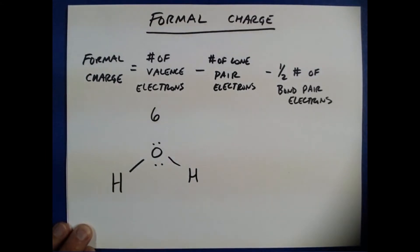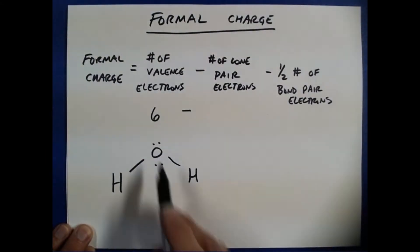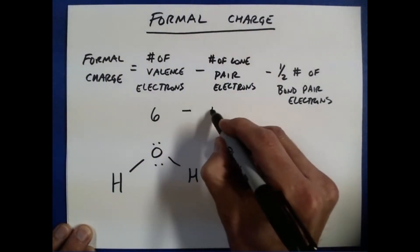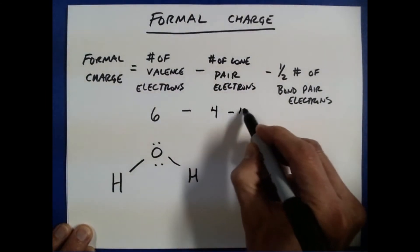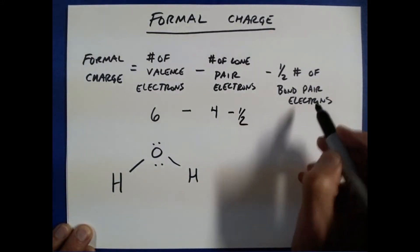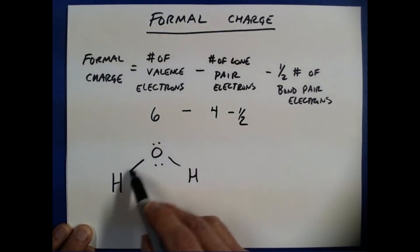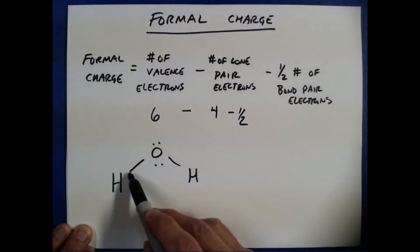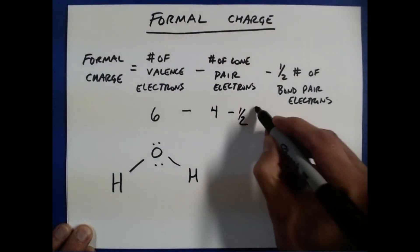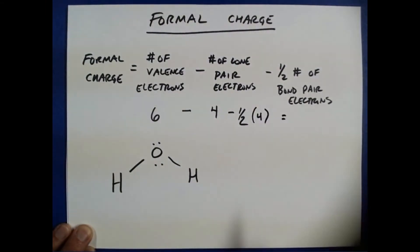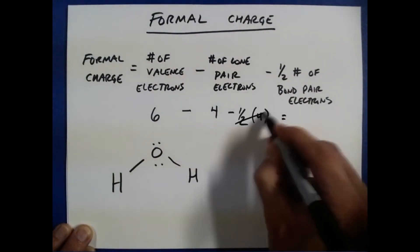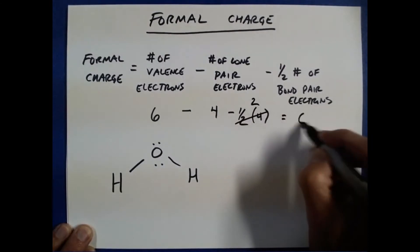Now we're going to subtract the number of lone pair electrons that surround the oxygen atom, which are four. And finally, we're going to subtract half the number of bond pair electrons that surround the oxygen in the water. Since each bond has two electrons in it, the number of bond pair electrons connected to this oxygen is four. So my formal charge then becomes six minus four minus half of four, which is two. Six minus four minus two is zero.